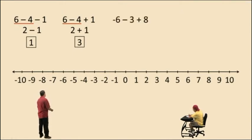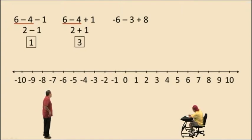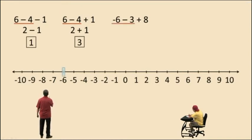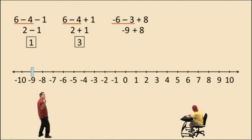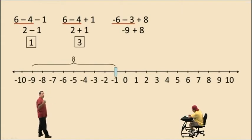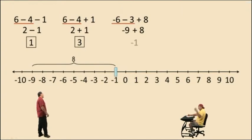Let's look at this problem: negative 6 subtract 3 plus 8. Notice we have a subtraction operation and an addition operation. We have negative 6 in front, so negative 6 subtract 3 is negative 9. Negative 9 plus 8 is not going to cross 0, so we're going to have a negative result. Negative 9 plus 8 is negative 1.